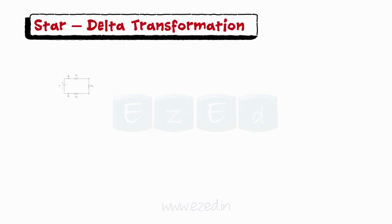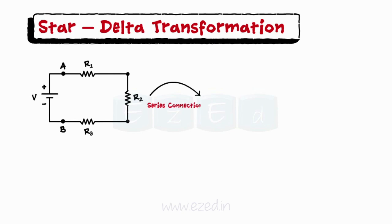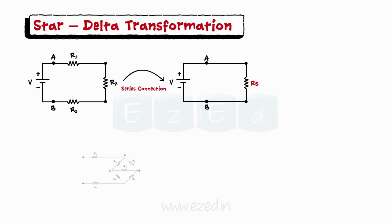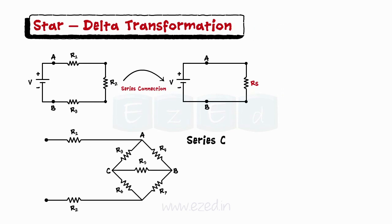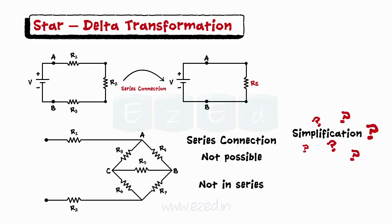We have already seen series resistors getting replaced by their equivalent resistor. But in some cases, we may not get a direct series connection between the resistors. In the network shown, resistances R3 and R6 or R4 and R7 seem to be in series, but they are actually not. So how to simplify these types of networks?